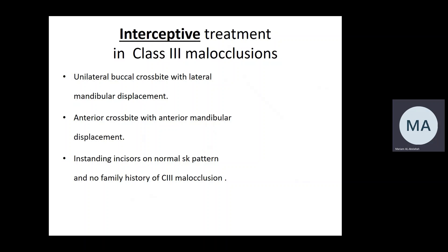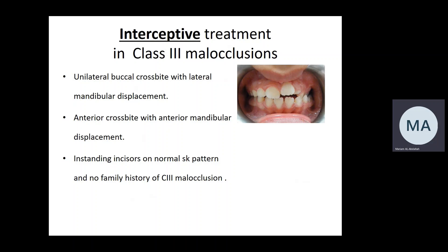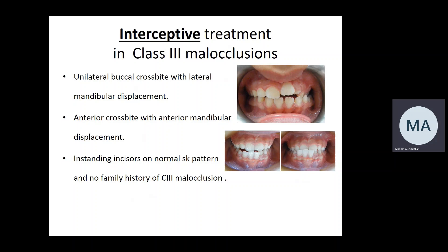Starting with interceptive treatment — as you know, interceptive orthodontics in general is an early orthodontic treatment applied to children in the mixed dentition in order to reduce the severity of the developing malocclusion or to completely correct it. This applies to certain scenarios in Class III malocclusions: patients with unilateral buccal crossbite with mandibular displacement, which requires immediate treatment as soon as it's diagnosed because this is a functional shift of the mandible. Also, anterior crossbite with anterior mandibular displacement, what we call pseudo-Class III.